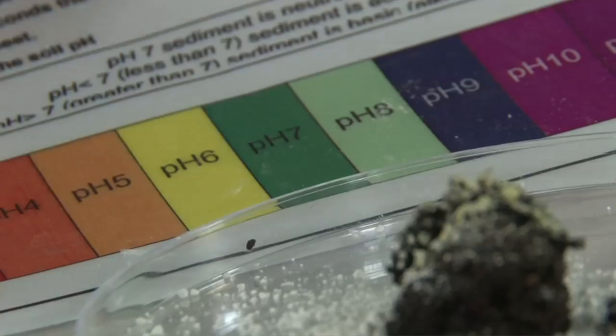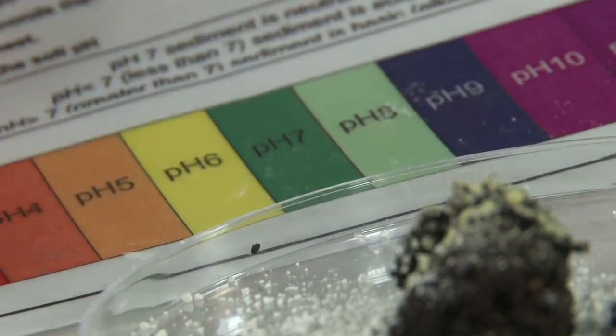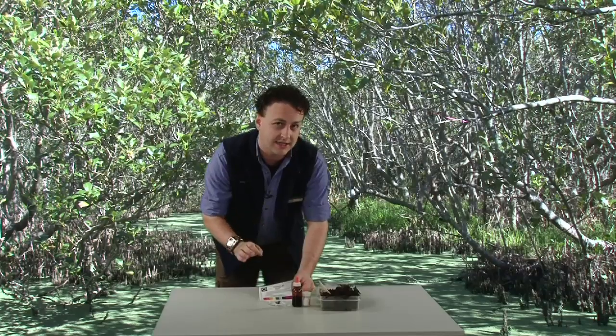If we look at our white sample here we can see it's a pH of about 6. It's got a yellow color which is just slightly acidic.